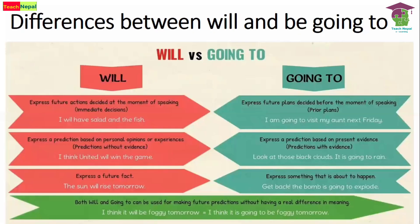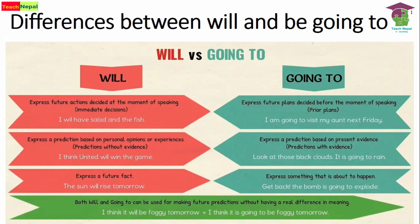Now let's see some differences between 'will' and 'be going to.' 'Will' expresses future actions decided at the moment of speaking — immediate or spontaneous decisions. 'Be going to' expresses future plans decided before the moment of speaking — prior plans. For example: 'I would have salad and peas' is an immediate decision. 'I'm going to visit my aunt next Friday' is an already planned decision. For predictions, 'will' is based on personal opinion without evidence; 'be going to' involves visible evidence.